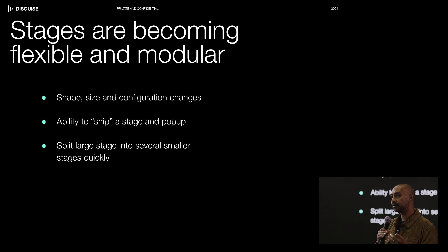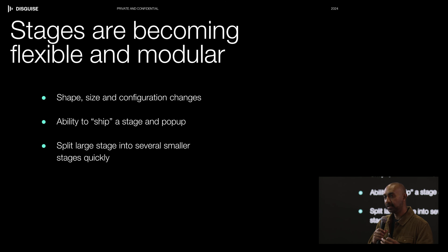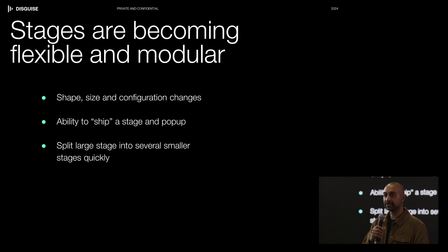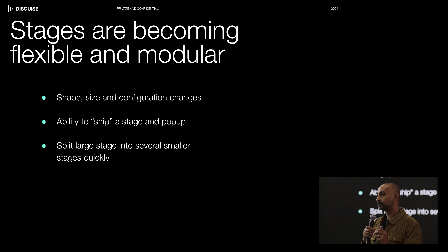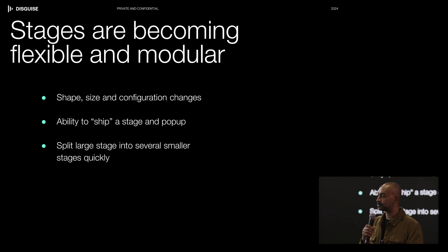Another trend we're seeing is pop-ups. Pop-ups are defined as a temporary stage for a temporary production. For example, if there's a film shoot in Atlanta needed for only two weeks, a company can ship LED panels, media servers, and technicians to that location, build a stage, complete the shoot, and ship it all back. We're seeing a lot more pop-ups than previously, because crews don't want to travel to the nearest virtual production stage — they want the stage to come to them.